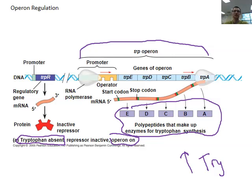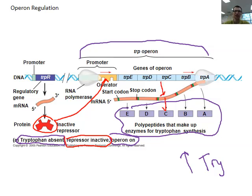Tryptophan is absent and the operon is turned on because the repressor is inactive. If the gene were turned off, the repressor would fit right in there and block the ability for this DNA to be read as mRNA and translated into amino acids. But it is currently inactive. This is kind of like if you had a lake below a dam and the lake dried up — you needed to refill it, so you opened the dam and let the water out.